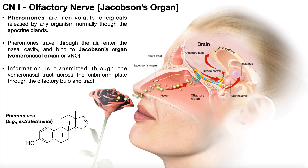Pheromones are non-volatile chemicals — just molecules basically — released by organisms normally through their apocrine glands. As a brief review from the integumentary system: sudoriferous glands are the normal sweat glands found all over the body, producing salty sweat with waste products. Apocrine glands are fewer and found only in select areas — in humans, the axilla (armpit) and the perineum region. These apocrine glands release a secretion that contains molecules called pheromones.